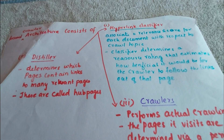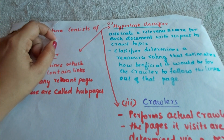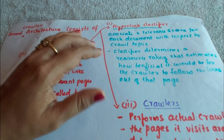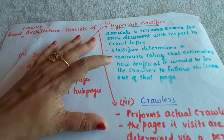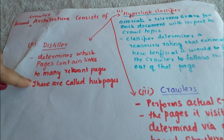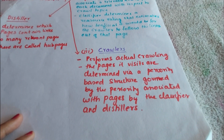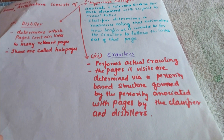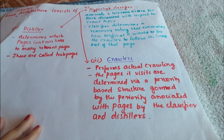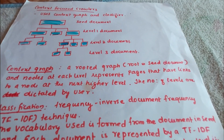The focused crawler consists of three primary components. First is the hyperlink classifier, which associates a relevance score for each document with respect to the crawl topic and estimates how beneficial it would be to follow the link out of that page. Second is the distiller, which determines which pages contain links to many relevant pages — these are called hub pages. Third is the crawler itself, which performs the actual crawling; the pages it visits are determined via a priority-based structure governed by the priorities assigned by the classifier and distiller.